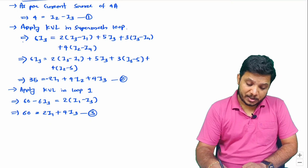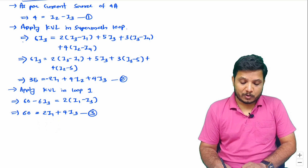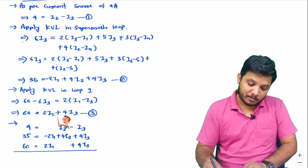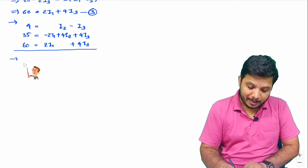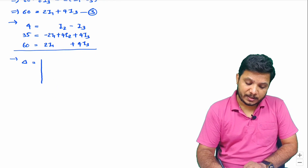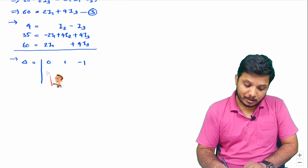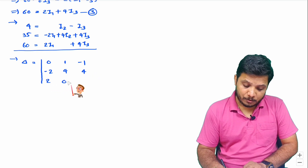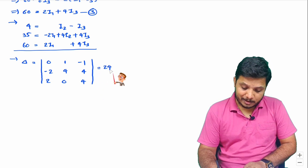Now we have three equations. Let me rewrite them in sequence and then solve I1, I2, I3 by applying a matrix method. I'll first find the delta value from the coefficients. The matrix is: [0, 1, −1; −2, 4, 4; 2, 0, 4]. Solving this determinant gives delta equals 24.